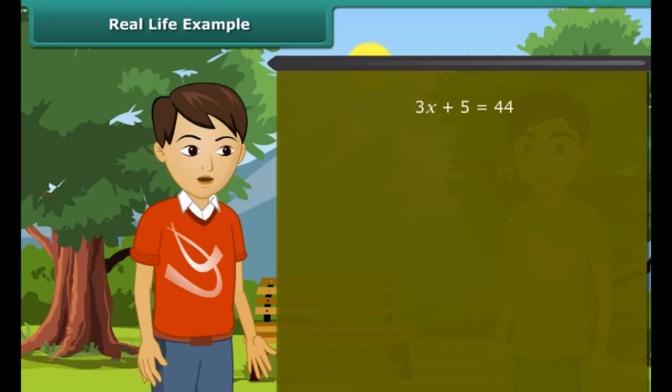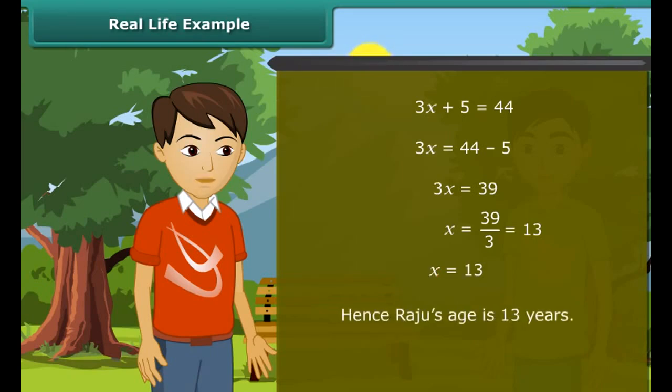Transposing 5 to right hand side, we get 3X which is equal to 39. Transposing 3 to right hand side, we get X as 13. Hence, Raju's age is 13 years.